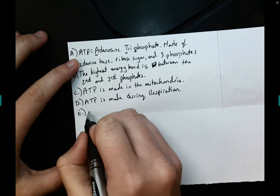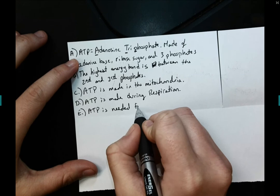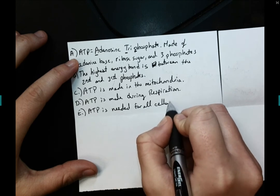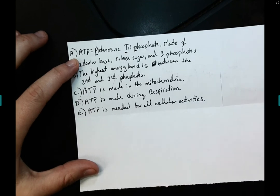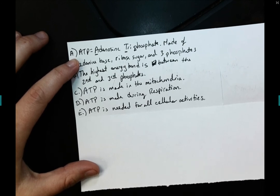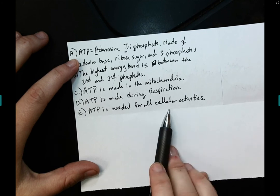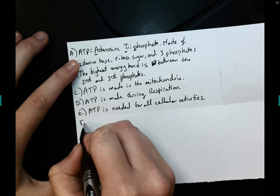Part E, ATP is needed for all cellular activities. Again, anything that our body needs for plants and animals. So for animals, things like muscle contraction, active transport to move molecules in and out of our cells. For plants, things like bioluminescence. So any type of cellular activity needs to be powered by ATP.